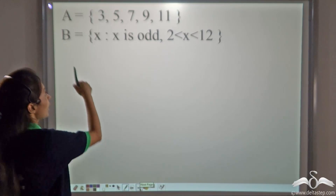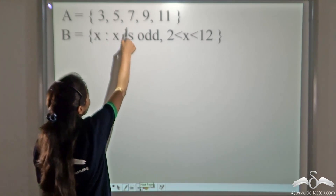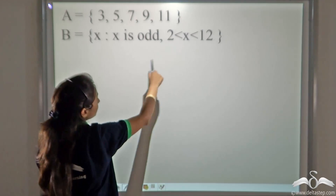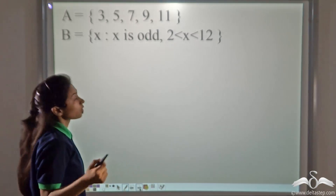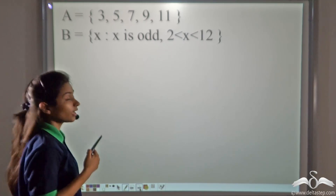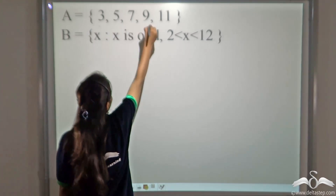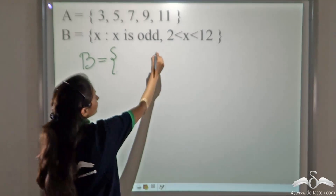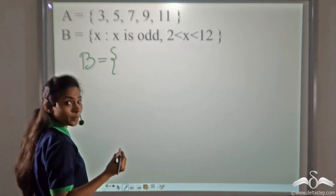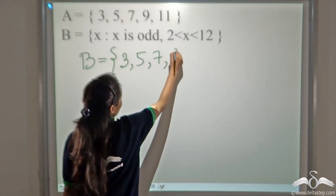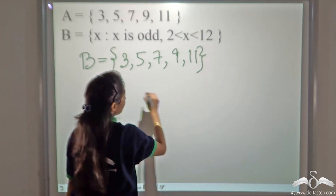Now do it yourself. A is the set {3, 5, 7, 9, 11} while B is the set of x where x is an odd number and x is between 2 and 12. Tell me whether B is a proper subset of A. First, let us write the sets in roster form. A is {3, 5, 7, 9, 11}. The odd numbers between 2 and 12 are 3, 5, 7, 9, 11 — so B is also {3, 5, 7, 9, 11}.